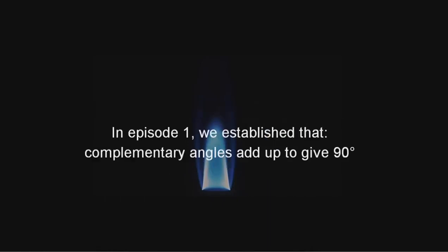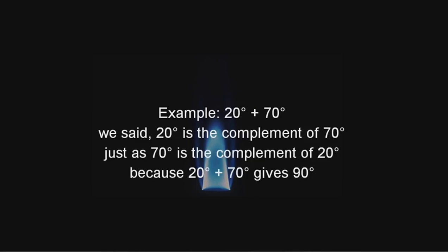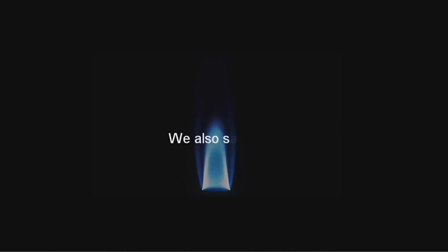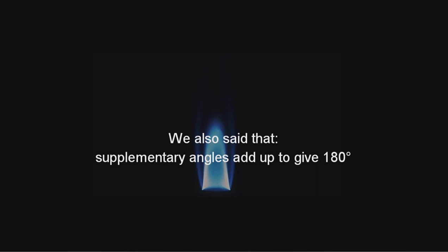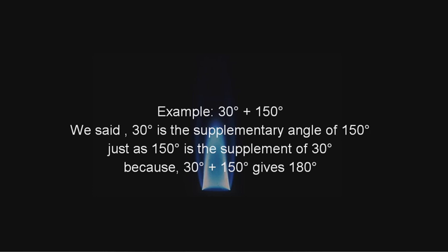In episode 1, we established that complementary angles add up to give 90 degrees. We gave examples using 20 degrees and 70 degrees — 20 degrees is a complement of 70 degrees, just as 70 degrees is a complement of 20 degrees, because 20 degrees plus 70 degrees gives 90 degrees. We also said that supplementary angles add up to give 180 degrees, using the example of 30 degrees and 150 degrees: 30 degrees is a supplement of 150 degrees, and 30 plus 150 gives 180 degrees.